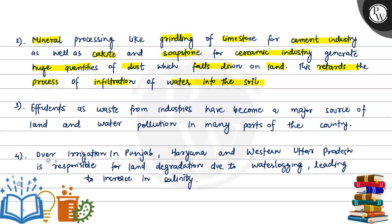In this case, minerals are removed and dust is generated. The dust is generated along with chemicals, and when the dust settles on the land, water cannot be properly filtered into the soil.